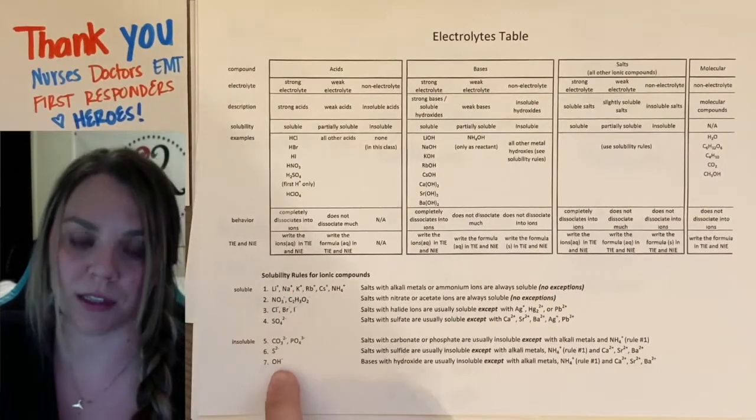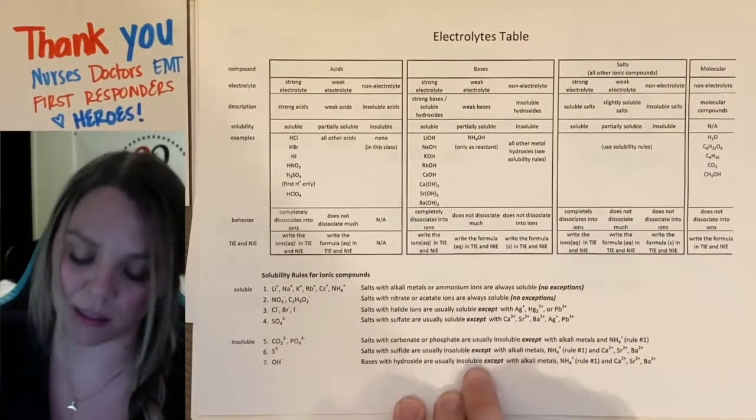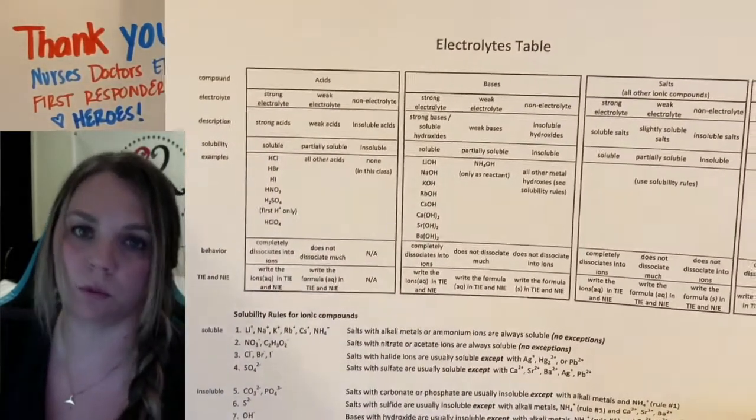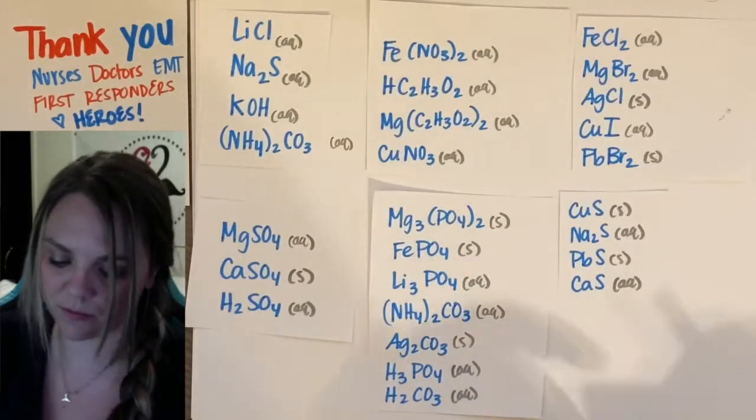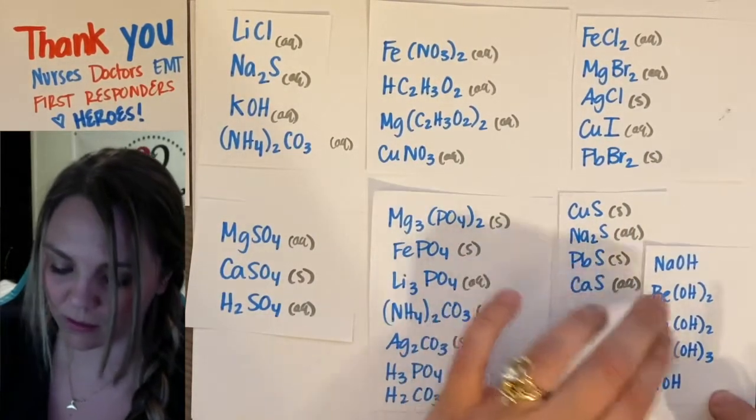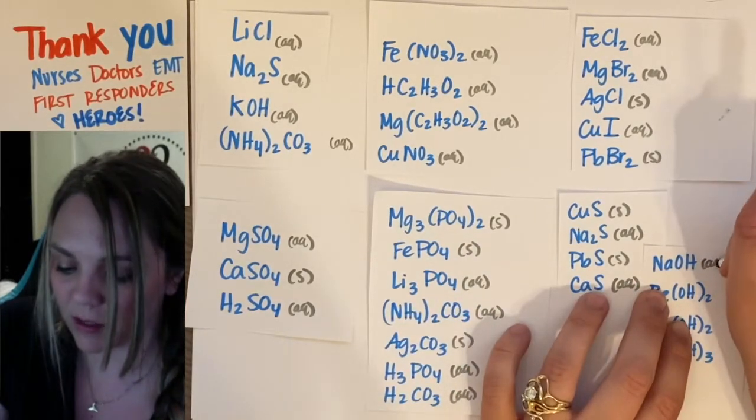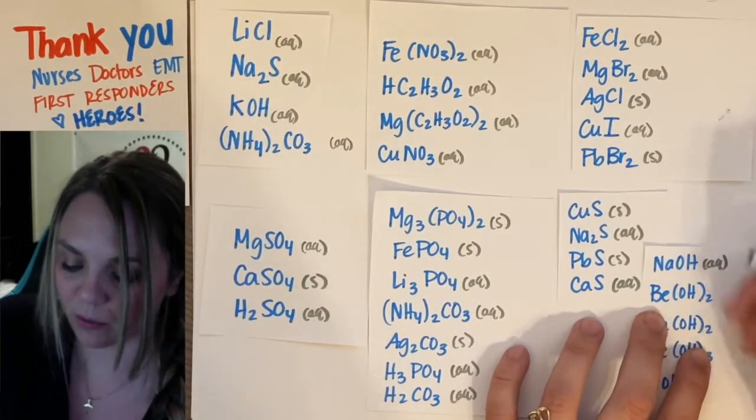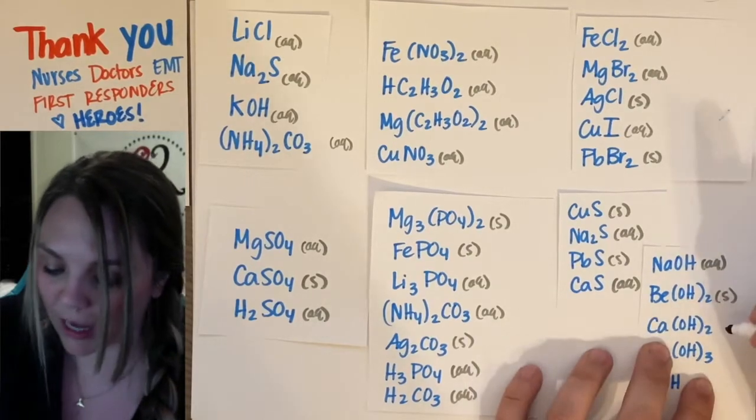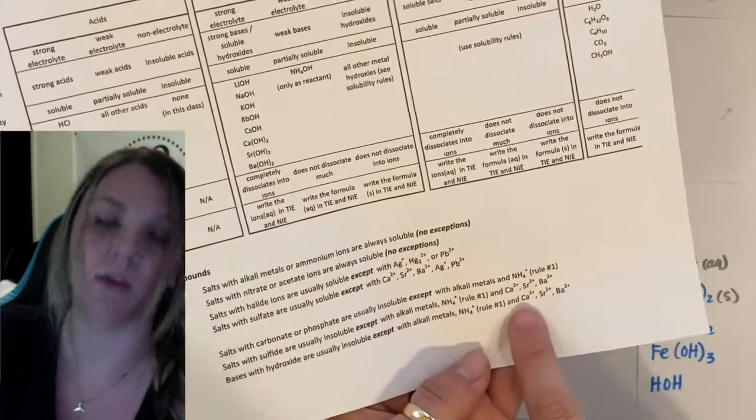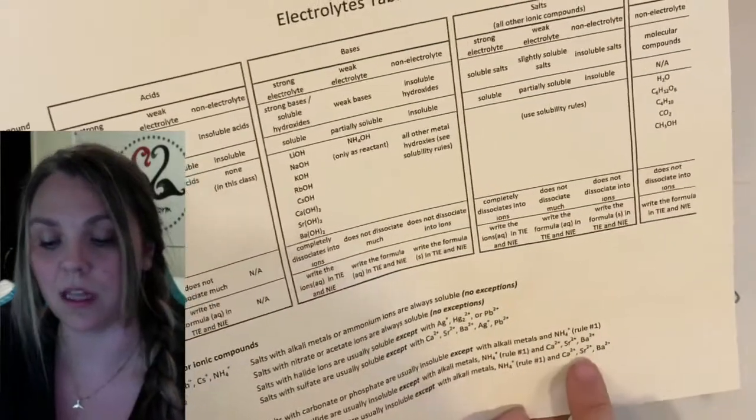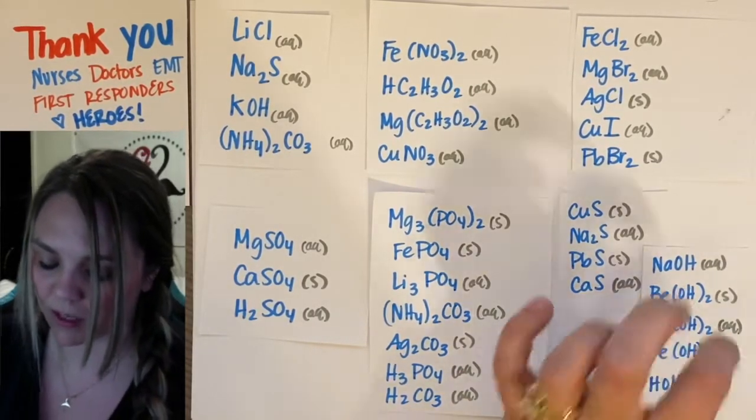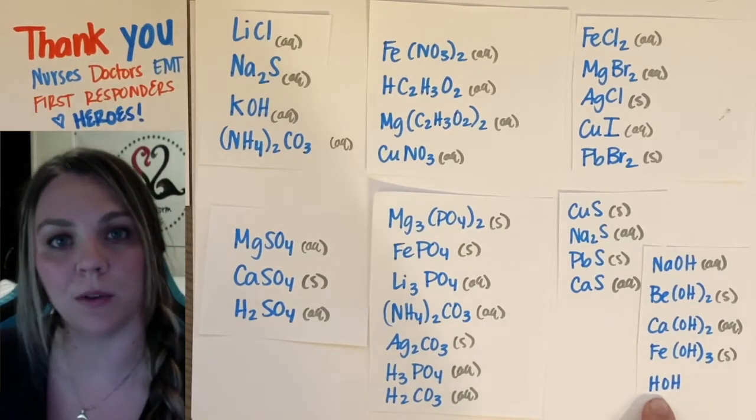Last but not least, your hydroxides are going to be insoluble, so they will be solids except when they bond with this stuff. Ammonium, Rule 1, and calcium strontium barium. So, sodium hydroxide, this would be aqueous because sodium was from Rule 1. Those are always soluble. Beryllium hydroxide, solid. Calcium hydroxide. That's one of your Rule Breakers. So, that is going to be aqueous. Iron 3 hydroxide is going to be solid.